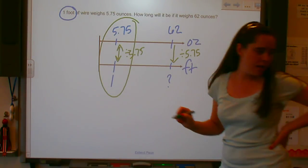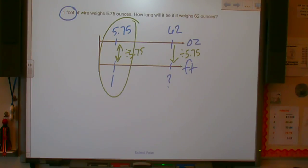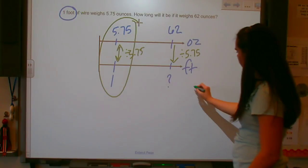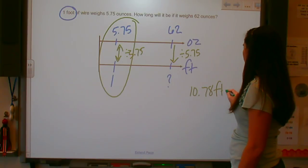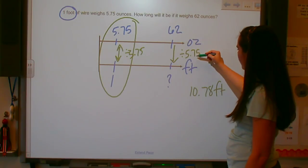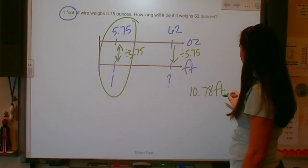So that means that one, sorry, that means that we will have, and I didn't keep all my papers in order, which wastes time, I know, I'm sorry. It would be 10.78 feet, because 62 divided by 5.75 is 10.